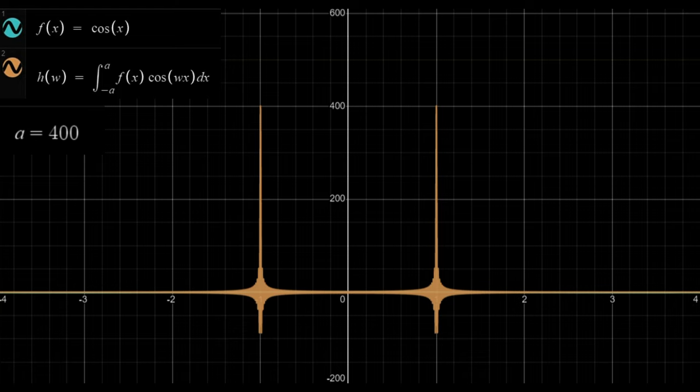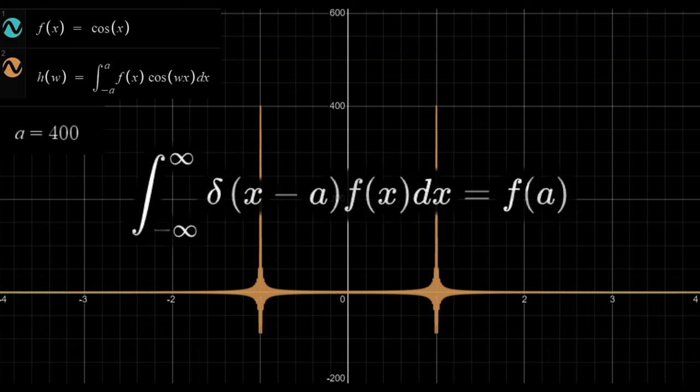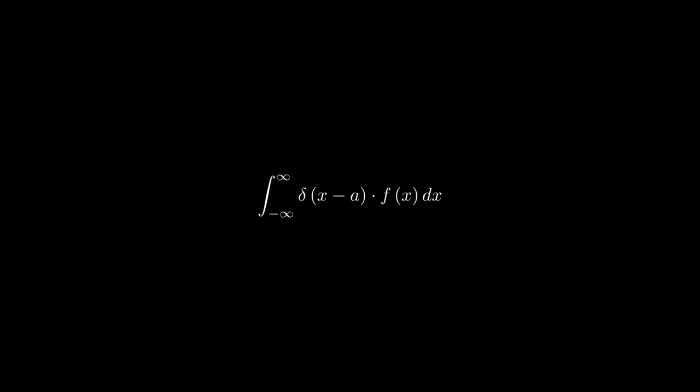The delta function has a very special property. Integrating delta of x minus a multiplied by some function f of x will give us f of a. This is because the integrand equals zero anywhere except x equals a, so we can throw out f of a as a constant. We're left with the integral of the delta function, which is equal to 1.